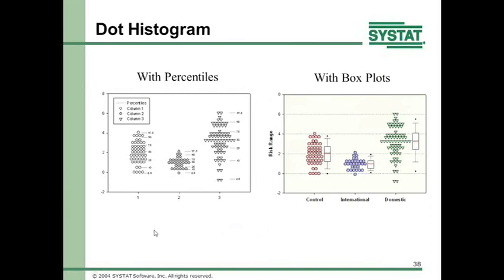Dot histograms show your actual data. You can have it for multiple data sets and add things to it — for example, percentile lines or a box plot overlaid. These show the mass of your data, whether the mean is different visually, and what the spread is visually.